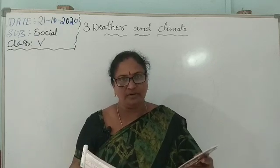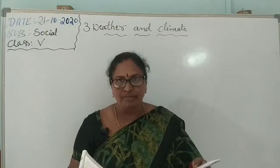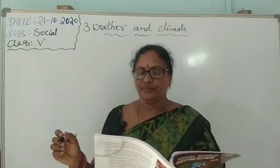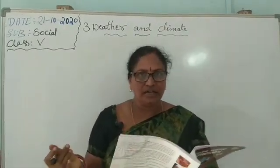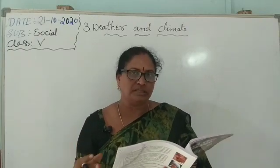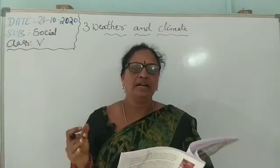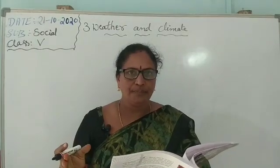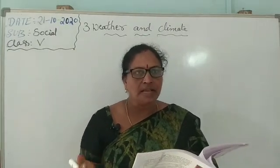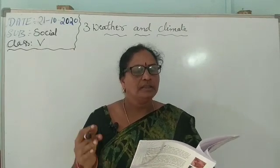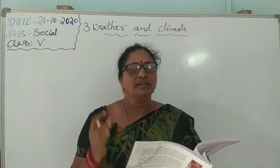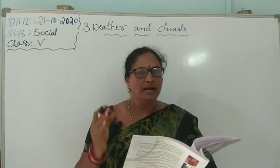The first factor of climate is distance from the equator. The equator passes through the middle of the earth. The sun always shines brightly on the equator, and the sun's rays fall directly and vertically on the equator. This means the equator feels a very hot and harsh climate.